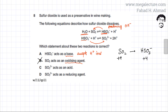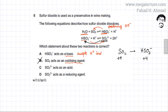Statement C says SO3²⁻ acts as an acid — an acid being a substance that produces H⁺ ions. SO3²⁻ appears in the second equation. Looking at the reverse reaction, SO3²⁻ would need to produce an H⁺ ion to act as an acid, but instead it is accepting an H⁺ ion, which means it is acting as a base. So option C is incorrect.